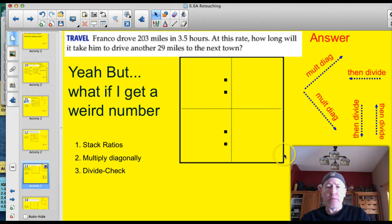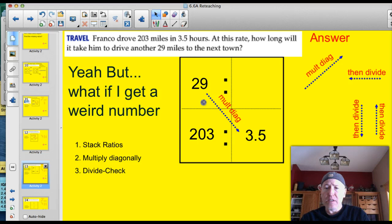So we'll do this one. Franco drove 203 miles in 3.5 hours. At this rate, how long will it take him to drive another 29 miles? Well, I'm going to show you this one. I'm going to set it up. It doesn't matter where you put the ratio. So I'm going to say he drove 203 miles in 3.5 hours. And if he were to drive 29 miles and the ratios were proportional, how many would it be? It doesn't matter which ratio you put in the top or the bottom. You're always going to have an empty spot. Same thing. We'll multiply diagonally. And then we're going to divide.